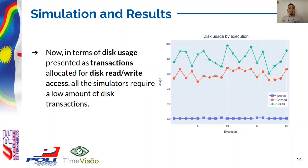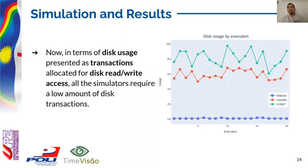In terms of disk usage, presented as transactions allocated for disk access, all simulations require a large amount of disk transactions. However, Webots requires almost no disk usage, with a mean disk use of 0.12%, followed by Gazebo and VREP with almost 6% and 8% respectively.